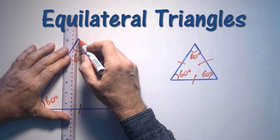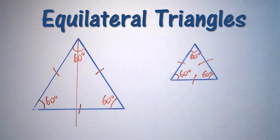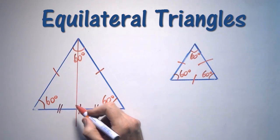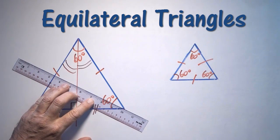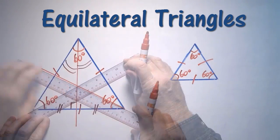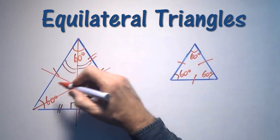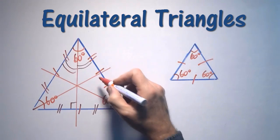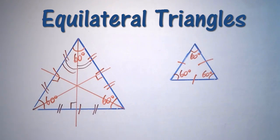If I were to bisect one of the angles of the equilateral triangle, I would bisect the length of the base and it would form a right angle. This goes for every angle of the equilateral triangle. So all these bisected sides become equal, and they all meet at right angles, and these are all axes of symmetry.